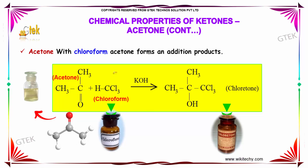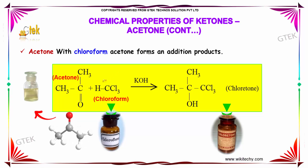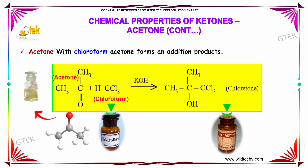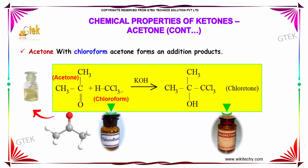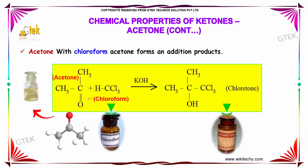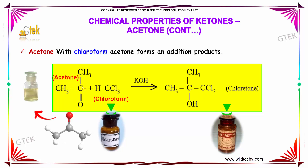Acetone with chloroform also forms an addition product. When acetone is reacted with chloroform (HCCl3) in the presence of potassium hydroxide, the CCl3 group attacks the carbonyl double bond, and the hydrogen attacks the oxygen to form an OH bond. The CCl3 group then joins the carbon atom, forming the product.